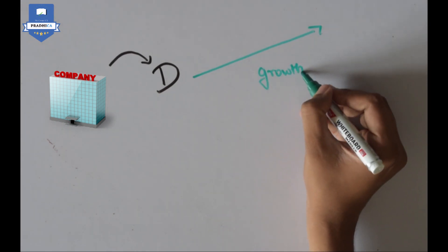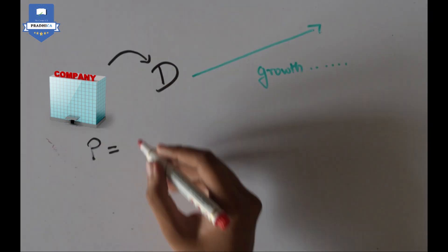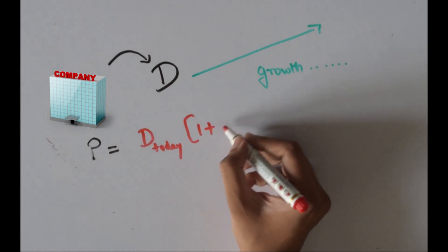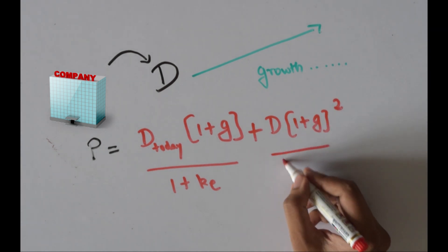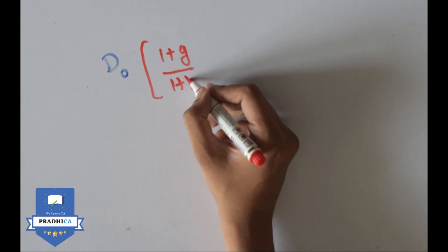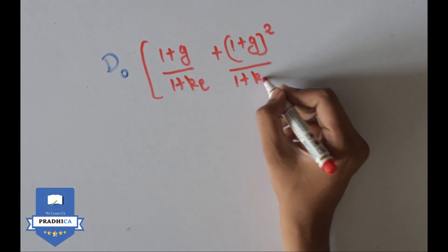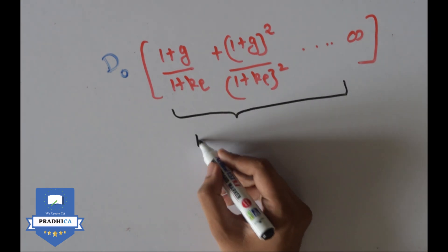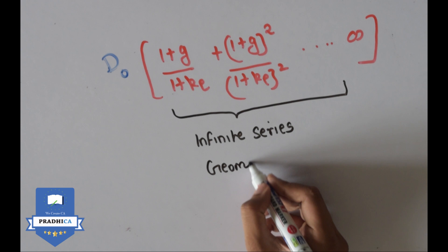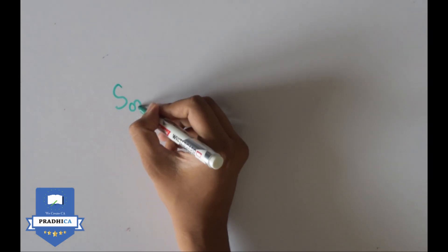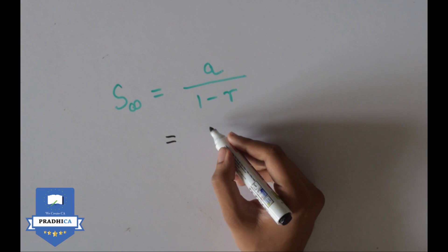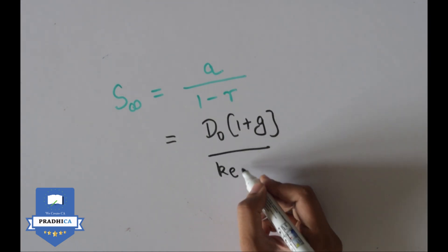Companies in the long run pay a dividend which grows at a steady rate. The price of these companies can be valued today by using present value techniques to discount the growing dividend. When we take dividends common outside the equation, the remaining part represents an infinite geometric series. We know that the sum of an infinite series progression is a divided by 1 minus r. Applying the same logic, we arrive at the formula proposed by Gordon to value shares today.